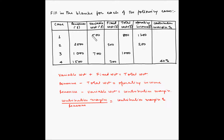For case number one, we have been given the variable cost but not the fixed cost. We have the total cost but not the revenue. We have the operating income but not the contribution margin percentage. Since variable cost plus fixed cost equals total cost, with total cost 800 and variable cost 500, we get 500 plus x equals 800, so fixed cost equals 300.